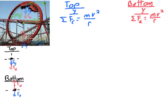Next, let's look at what your apparent weight would be — how much you feel like you weigh — on a vertical loop in a roller coaster. From Newton's second law, apparent weight is tied to normal force, so we need a free body diagram. We'll look at weight at both the top and bottom, starting with the top. We'll set the roller coaster going 14 meters per second at the top, which is slightly greater than the minimum speed needed.